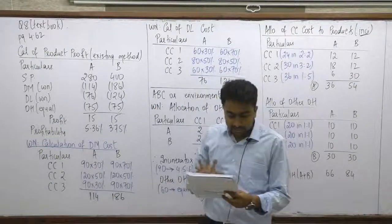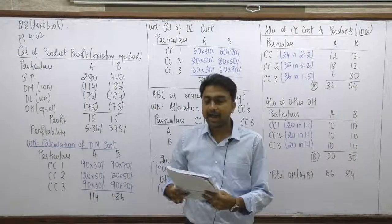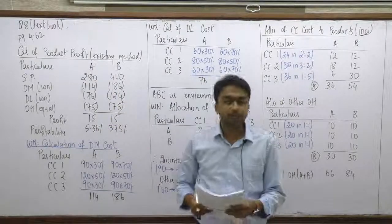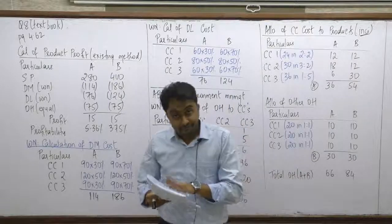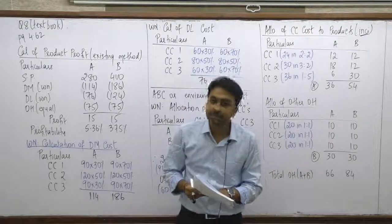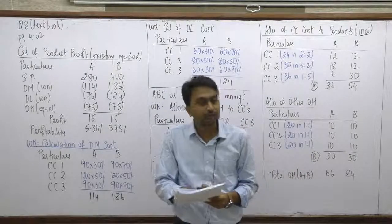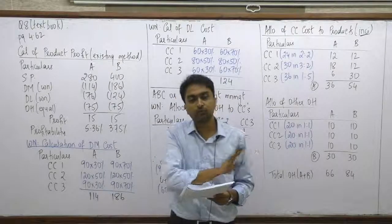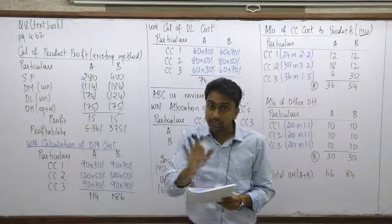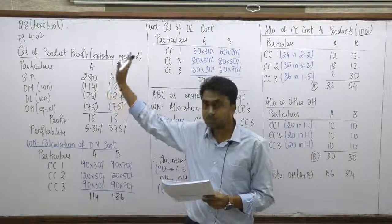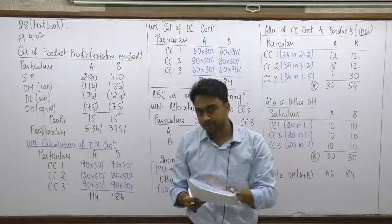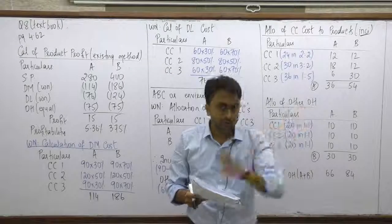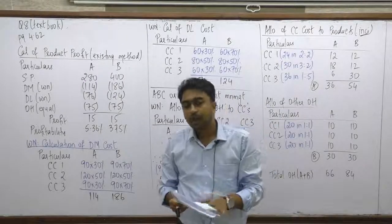We are discussing question number 8 from the textbook, on page 4.62 of the new edition of the costing module. This is a very important question for all May 2019 candidates. In the old edition of the module, this was a purely theory concept — a question on environmental management accounting. Now they have incorporated a numerical sum on that theory concept.